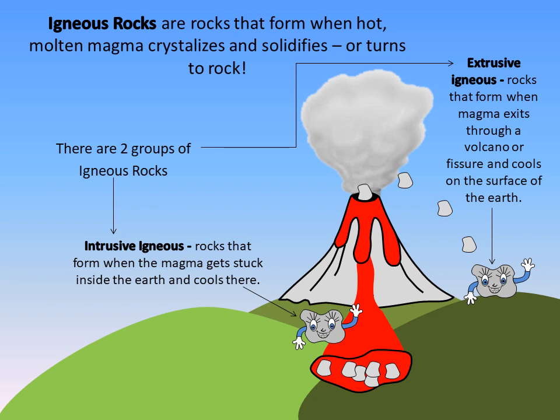To kick things off, we need some vocabulary. Let's begin with the definition of an igneous rock. Igneous rocks are rocks that form when hot molten magma crystallizes and solidifies, or turns to rock. The magma forms deep within the earth and rises to the surface. There are two types of igneous rocks: intrusive igneous rocks and extrusive igneous rocks.